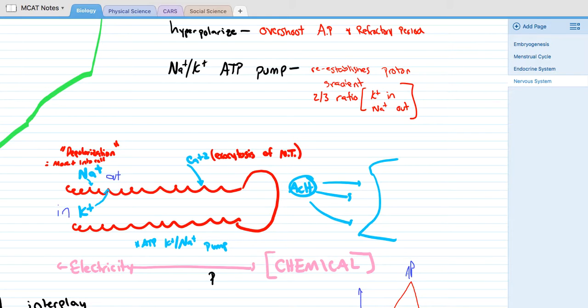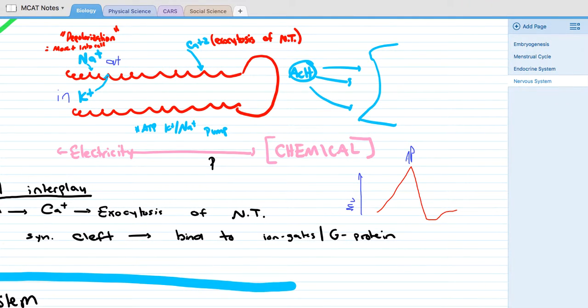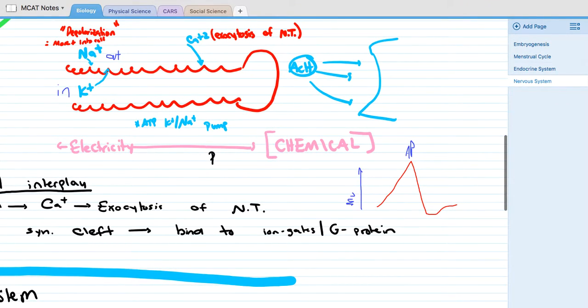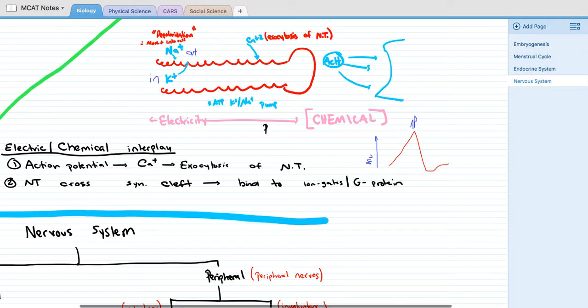For example, acetylcholine will be released out of this vesicle to the next cleft where it will receive a signal and then the whole process starts again. The electrical and chemical interplay's action potential will cause influx of calcium, which will cause an exocytosis of neurotransmitters. And then the neurotransmitters will cross the synaptic cleft in order to bind to ion-gated channels and G-protein complexes.